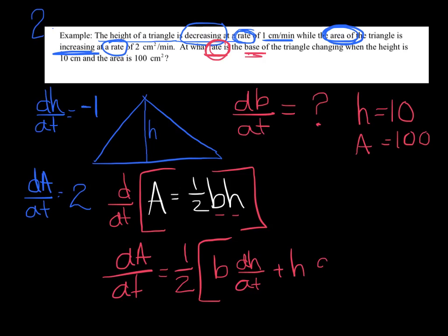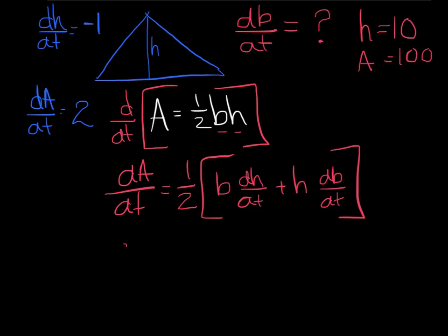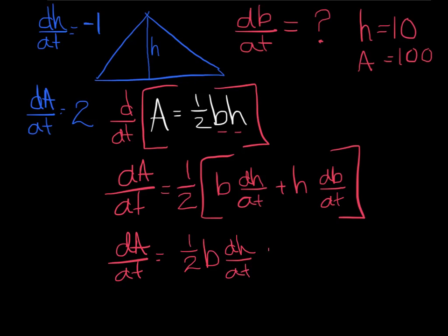I need those d-whatever/dt's because those variables B and H don't have the letter T. Cleaning up: dA/dt = ½B · dH/dt + ½H · dB/dt.